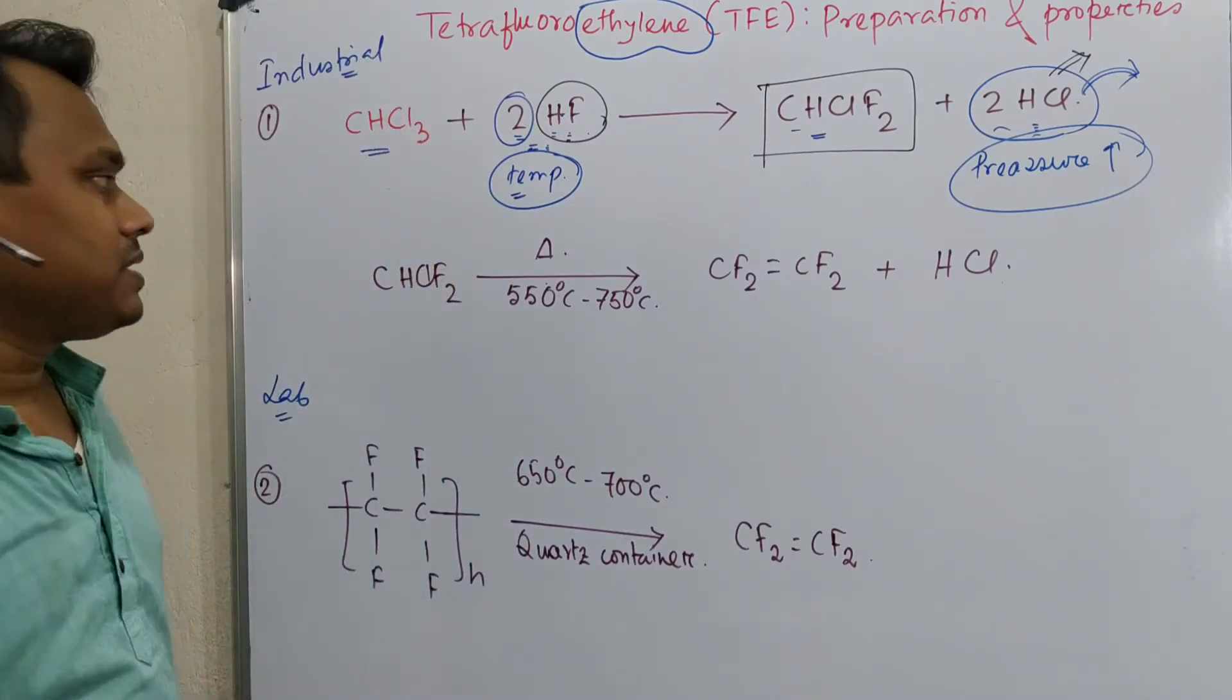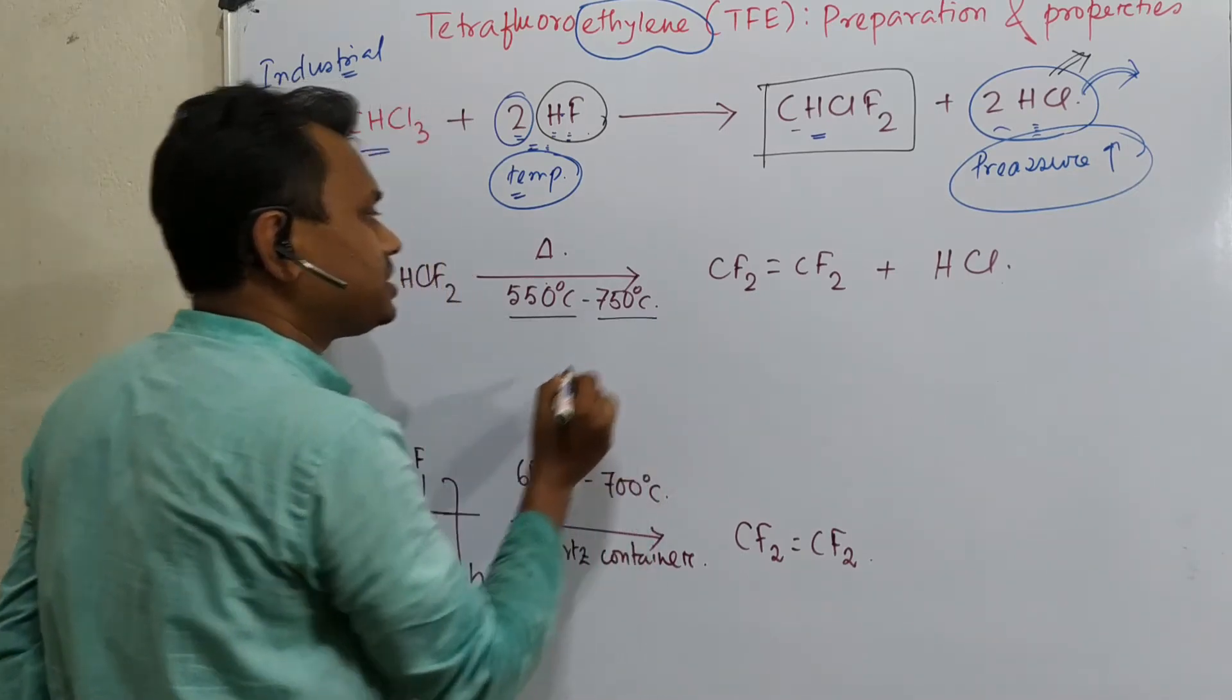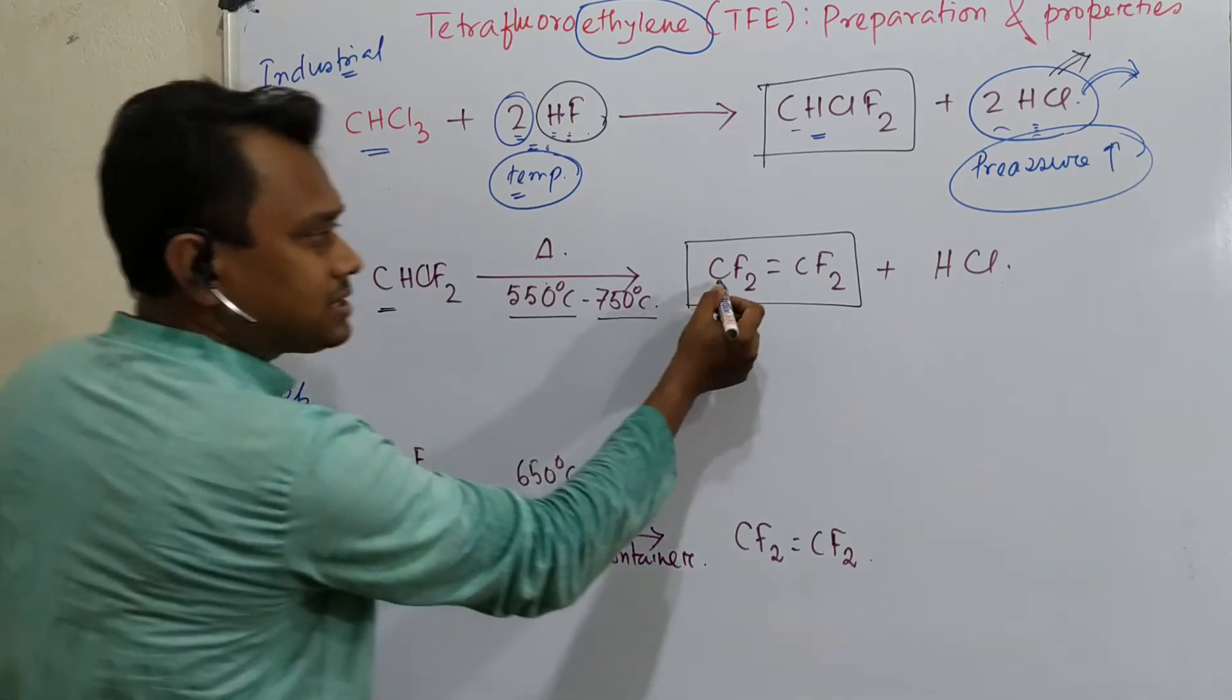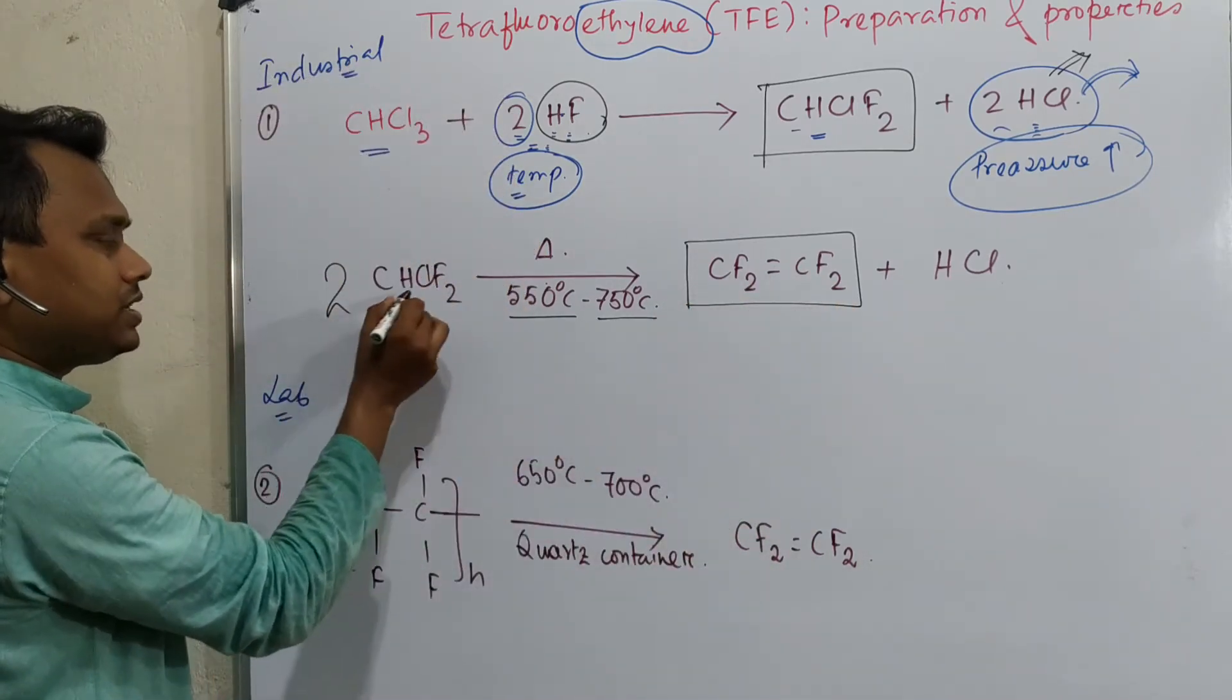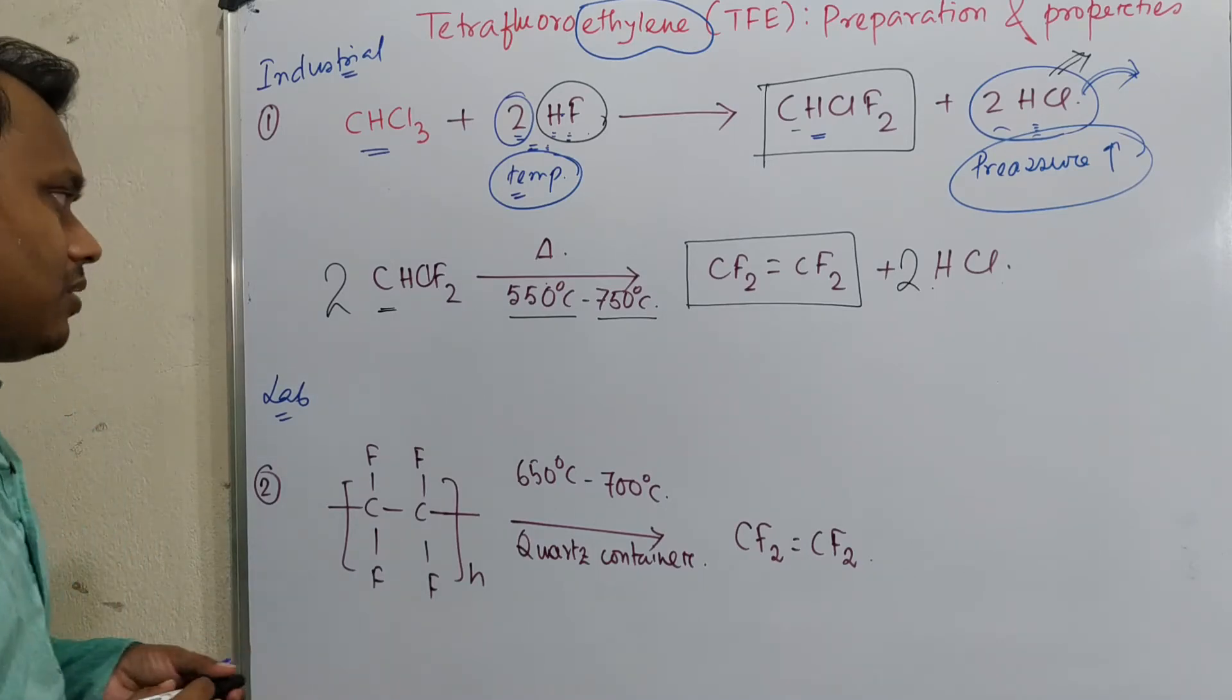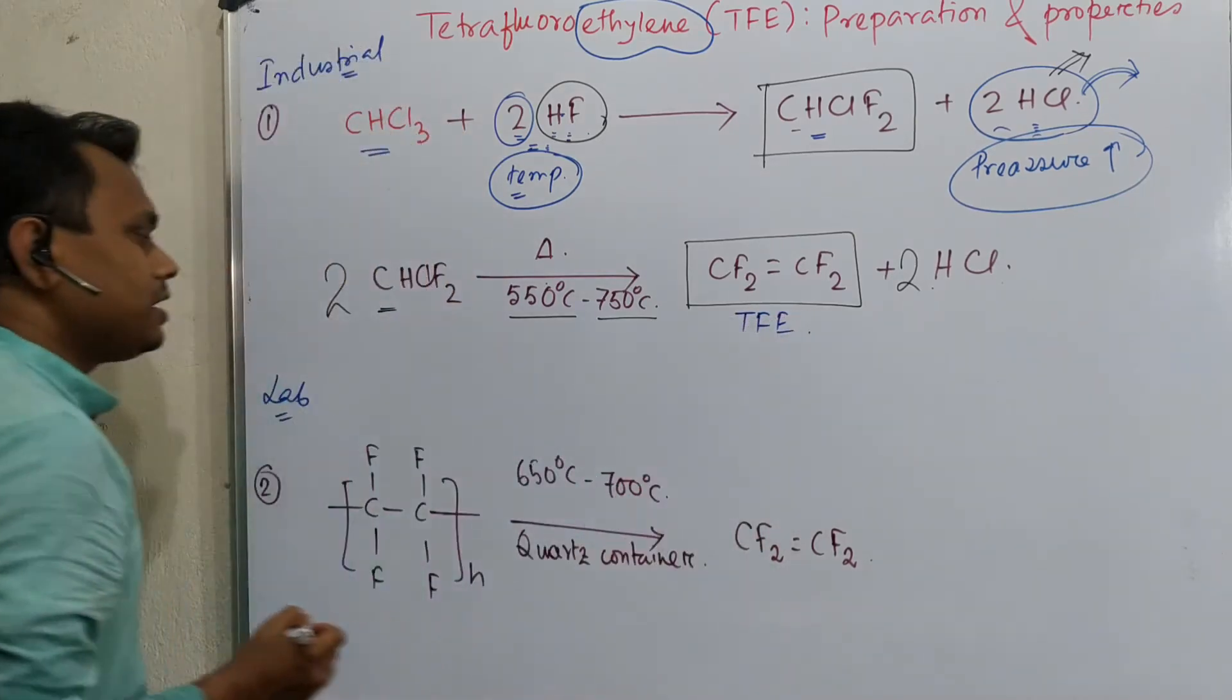So in this way, this chlorofluoromethane is produced. What happens in the next step? Next step, this chlorofluoromethane is heated at 550 to 750 degrees, and in this case tetrafluoroethylene is produced. Now if you balance the reaction, in this case two carbons are involved, HCl is also produced. Now here two are needed. If you put two, then it will result in two HCl. So I suggest always try to write the balanced equation. In this way, this tetrafluoroethylene, TFE, is produced industrially.